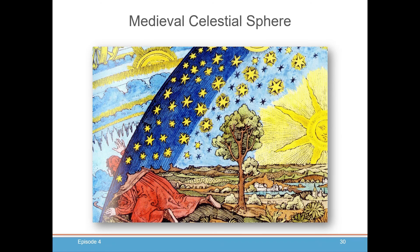So this was the idea behind the medieval celestial sphere. We all lived on the Earth, but if we were to pierce through the heavens, we would see the wheels turning of the planets, the sun, the stars, going around the Earth.